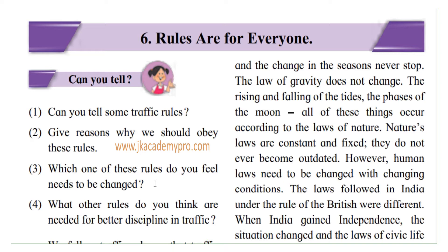Question 4: What are the rules you think are needed for better discipline in traffic? Sometimes you feel there should be a signal at a junction or crossroad. Sometimes we feel there should be a zebra crossing, or a speed breaker near a school or hospital where there are lots of people travelling.